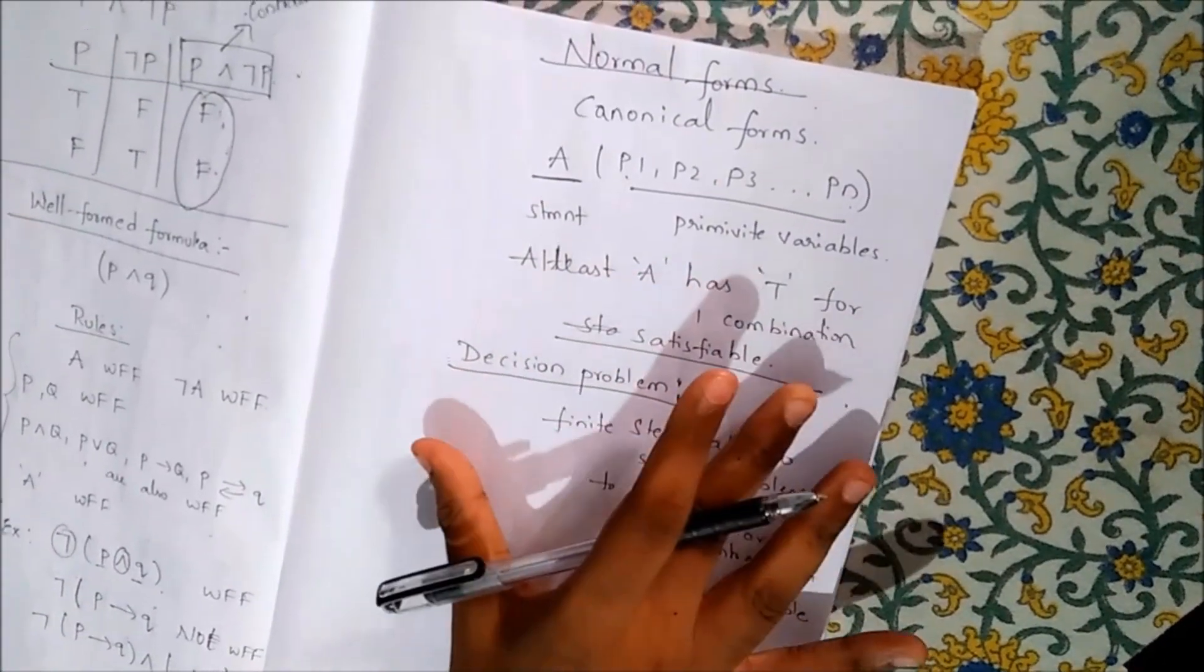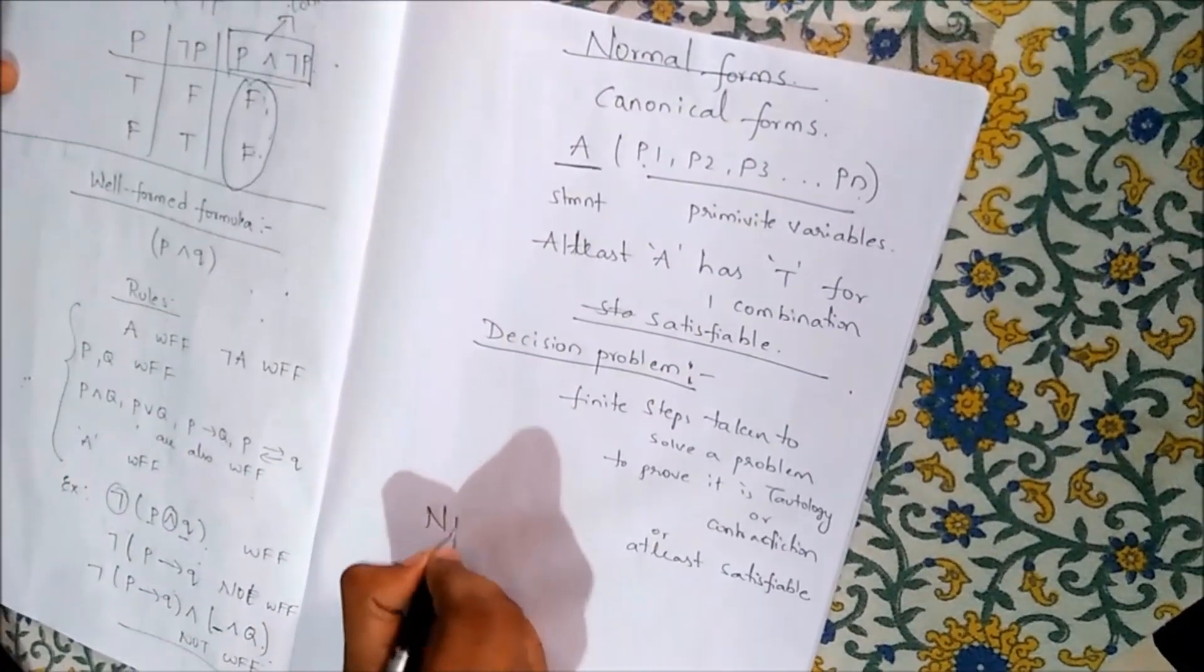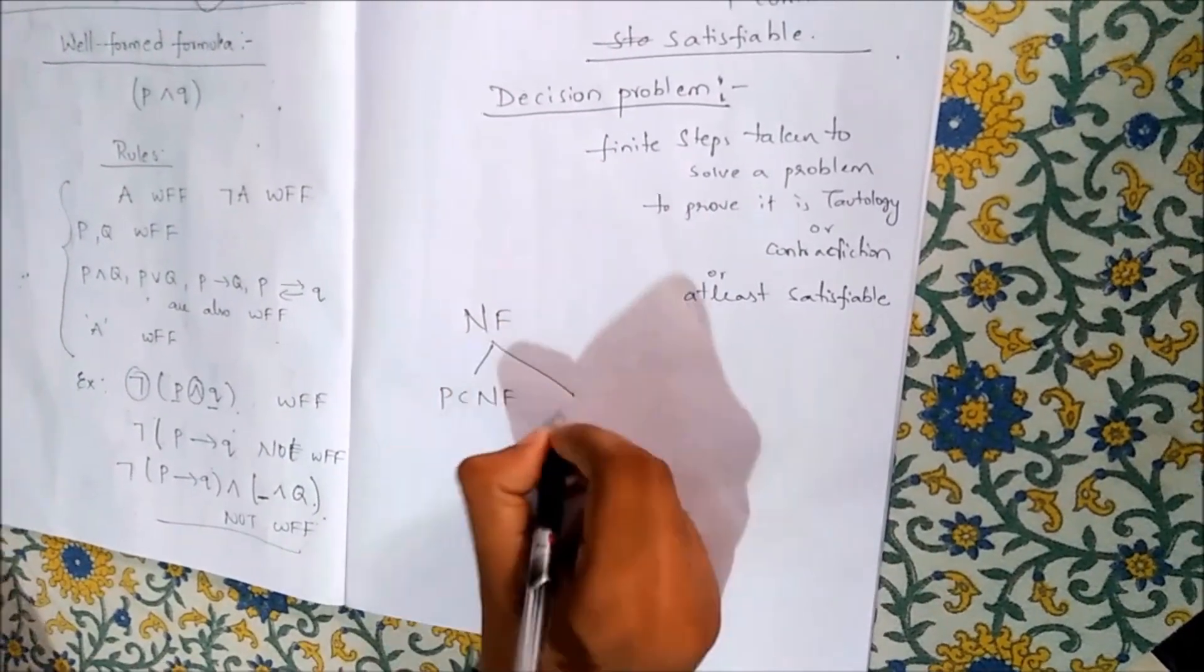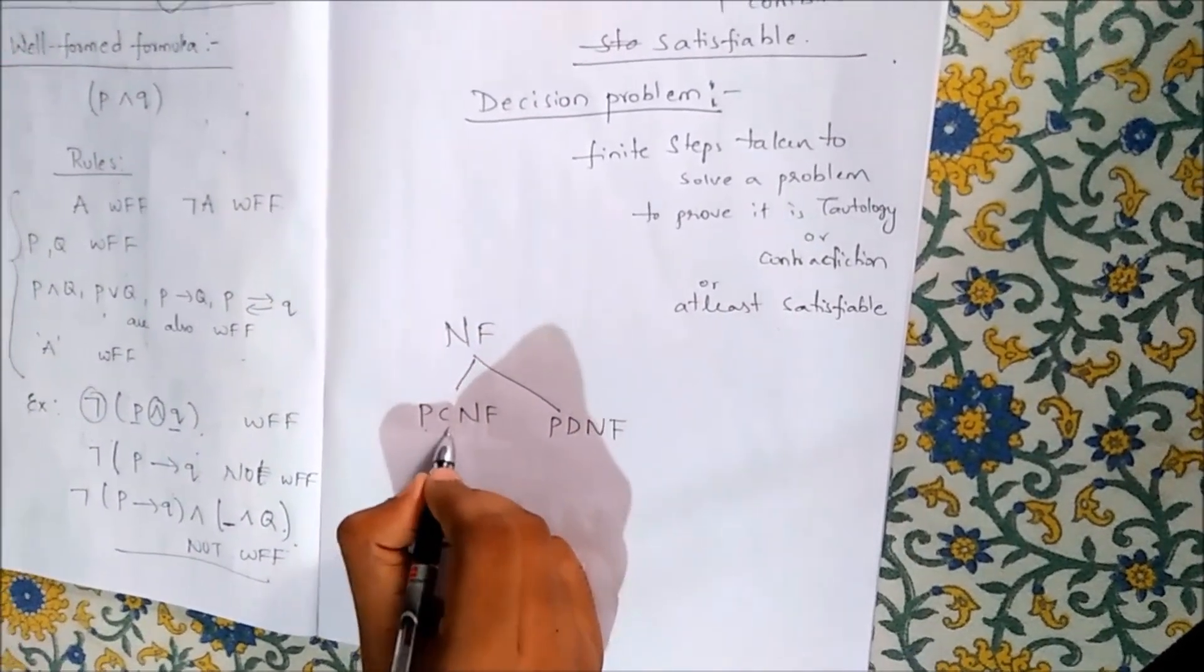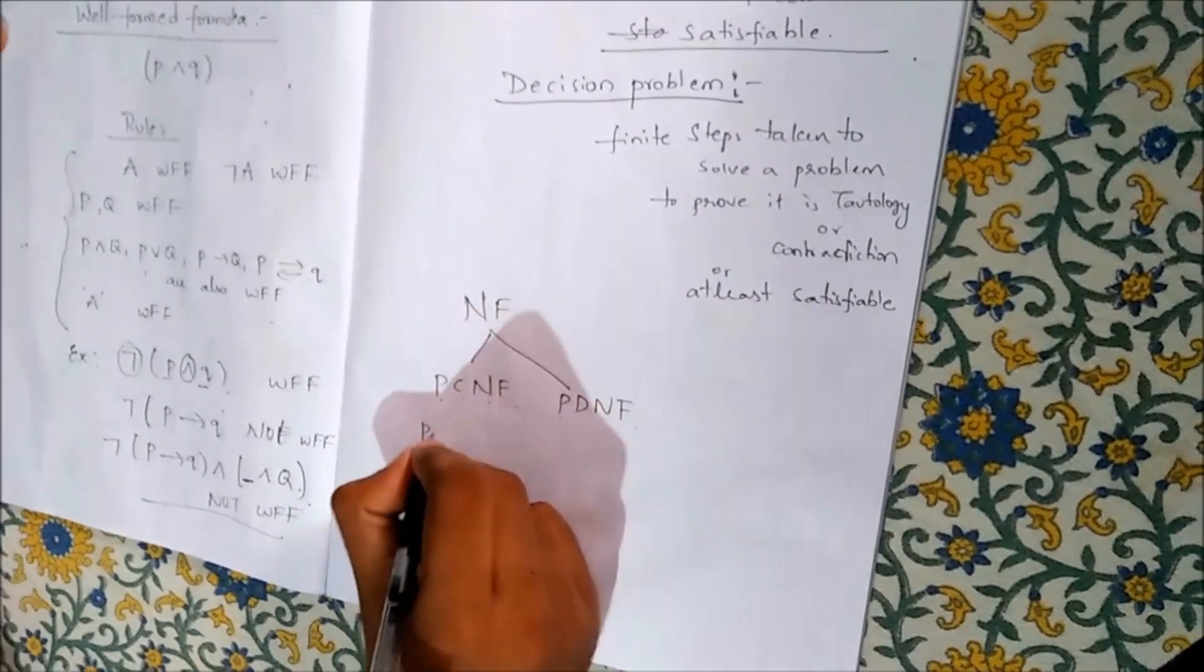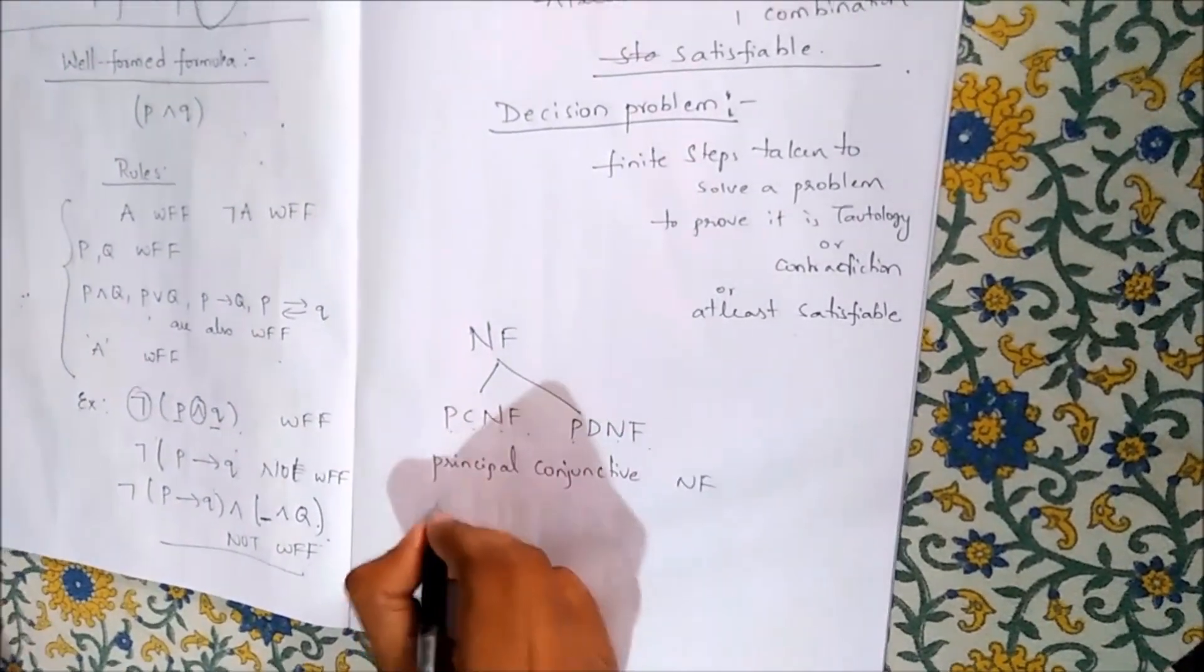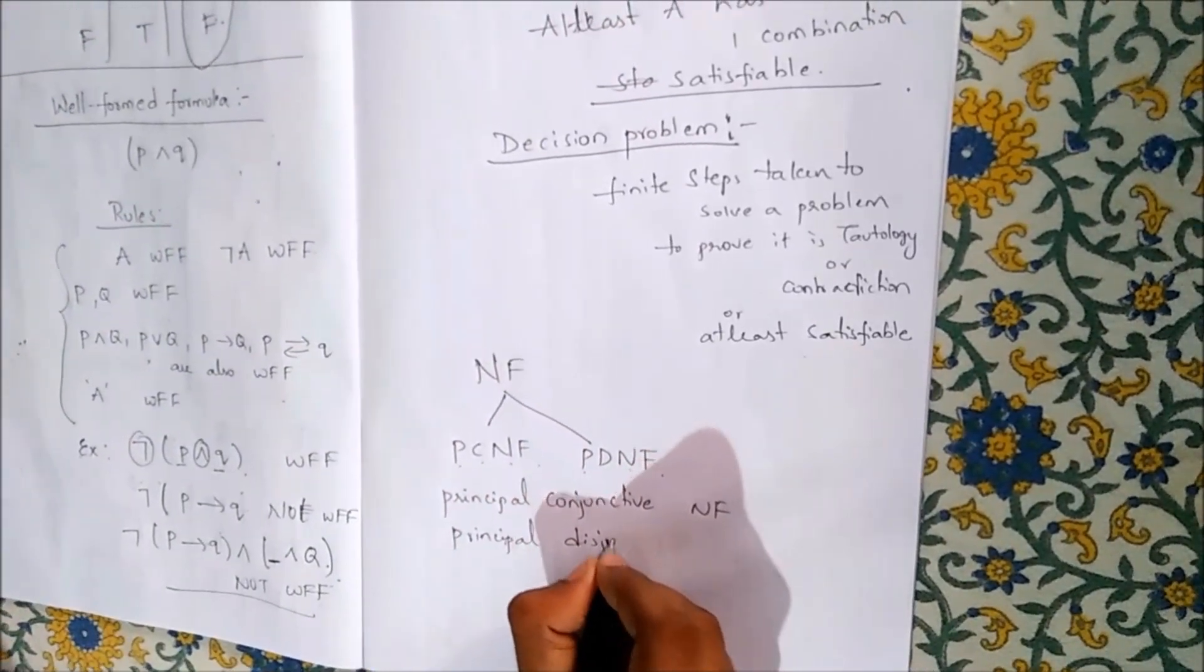This is about decision problem. Now coming back to normal forms, that is canonical forms. There are two types of normal forms: PCNF and PDNF. PCNF means principal conjunctive normal form. PDNF means principal disjunctive normal form.